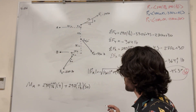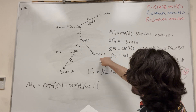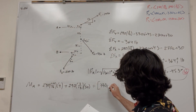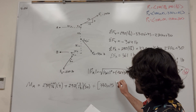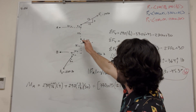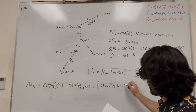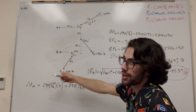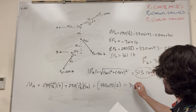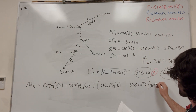Now Force 2: in the X direction, it's 330 cosine of 45, and the distance in the Y direction is 12 inches. Pulling in the X direction makes it go counterclockwise — positive. For the Y direction, pulling down makes it go clockwise, so we subtract: minus 330 sine of 45, and the distance in the X direction is 30 inches.